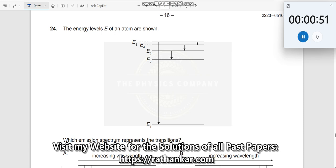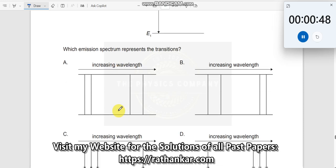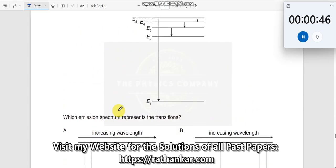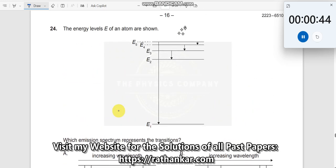Now let us look at the diagrams here. It says increasing wavelength. All four options show wavelength. How do you estimate the value of wavelength from energy differences? We know that lambda equals hc by delta E, or delta E equals hc by lambda.